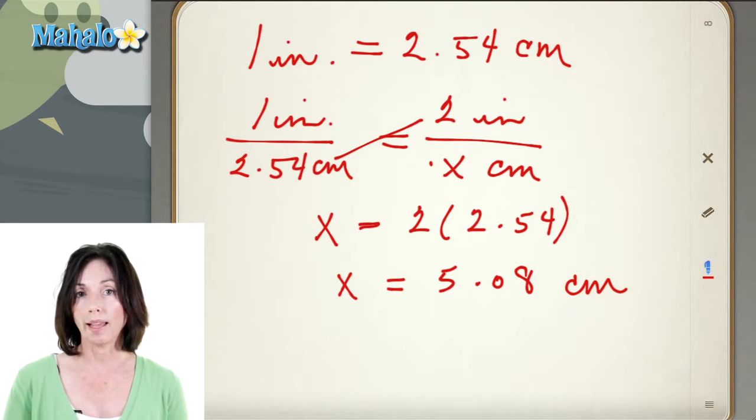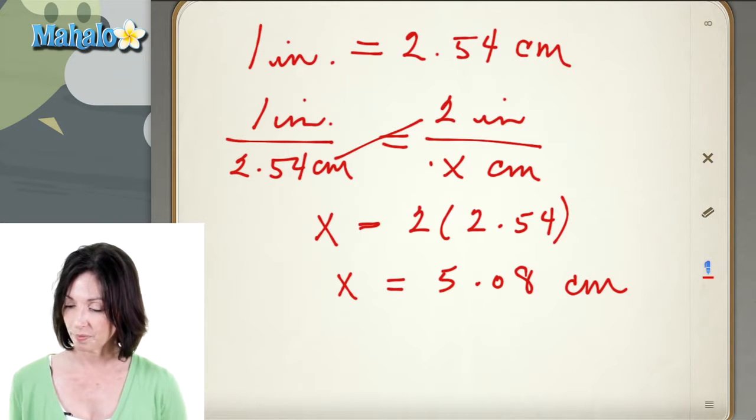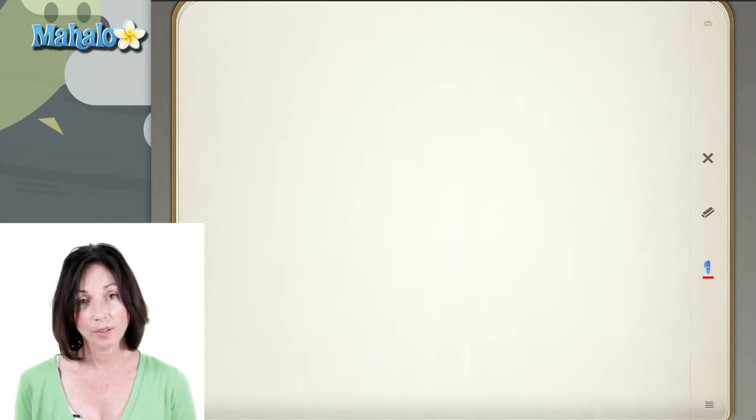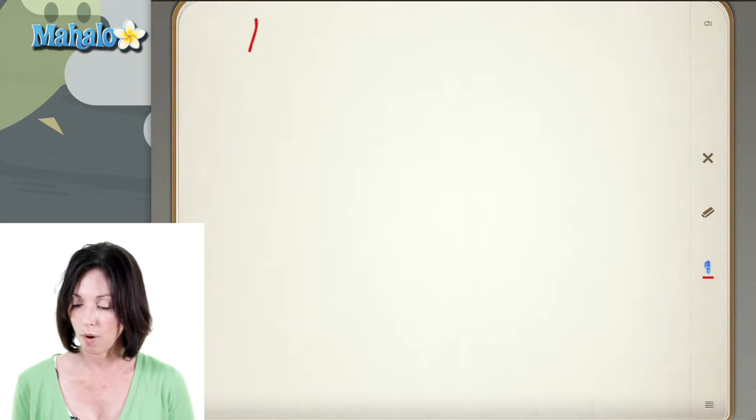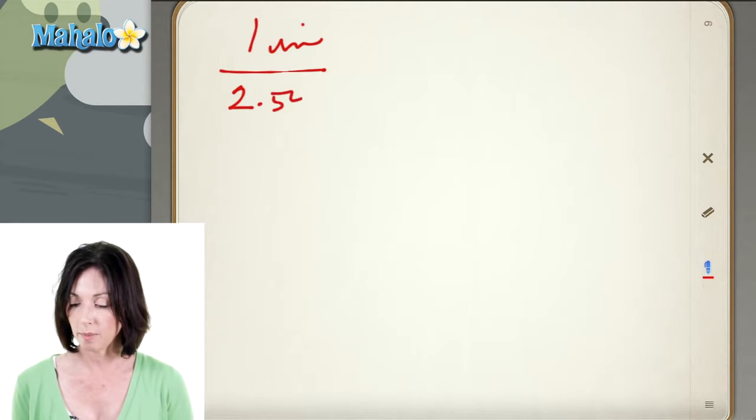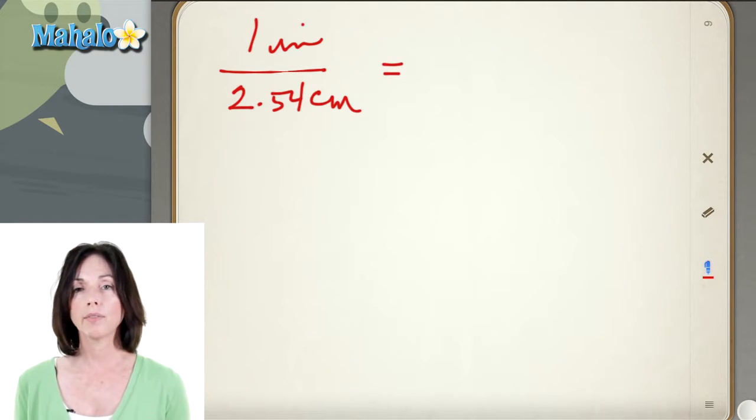Now you can also go the other way. If you have centimeters you can find out inches. So again we have our conversion factor. We have 1 inch for every 2.54 centimeters. Now let's say I have 7.62 centimeters and I want to convert it to inches.